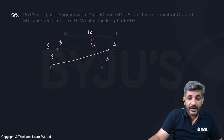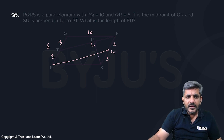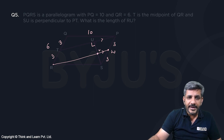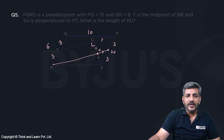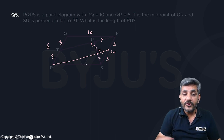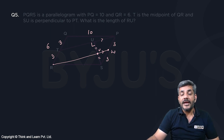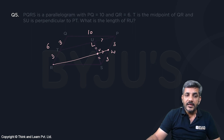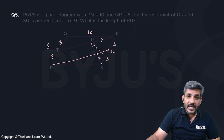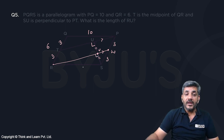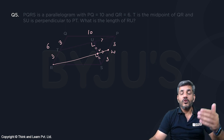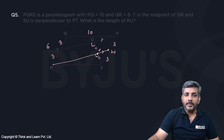Let us call this point W. Can I say RW is parallel to PT? In triangle PSU, if I call this point V, then V will also be the midpoint of this line segment, by the midpoint theorem — from the midpoint of a side, a line drawn parallel to the third side will automatically pass through the midpoint of the other side. Also, since SU is perpendicular to PT, SU will be perpendicular to RW as well, because PT and RW are parallel. If a line is perpendicular to one line, it is also perpendicular to any line parallel to it.